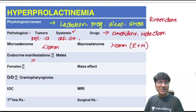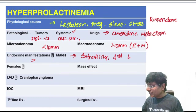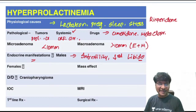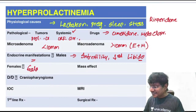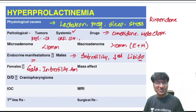Endocrine manifestations in males include infertility and decreased libido. In females, hyperprolactinemia causes galactorrhea, infertility, and amenorrhea (absence of menstruation).